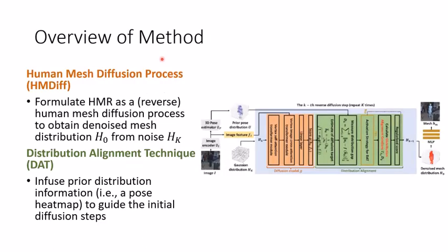Here is an overview of our Distribution-Aligned Diffusion process, which primarily consists of two parts. The first is the Human Mesh Diffusion process, HMDIF for short. We formulate HMR as a reverse human mesh diffusion process to obtain a denoised mesh distribution H0 from the noise HK. The diffusion model is shown in the orange part in this figure. Secondly, we also introduce a Distribution-Alignment Technique, or DAT for short. Using DAT, we can infuse prior information to guide the initial diffusion steps. DAT is shown in the green part in this figure.